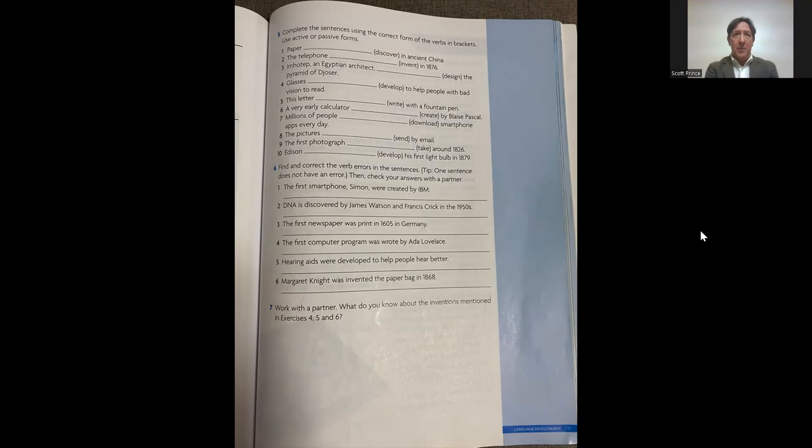Number four: glasses were developed to help people with bad vision to read. This letter was written with a fountain pen. Number seven: a very early calculator was created by Blaise Pascal. Number seven is an active sentence because it begins with people. It begins with who. Millions of people download smartphone apps every day. You can do that in the present. You don't have to change it to the past. Number eight: the pictures were sent by email. The first photograph was taken around 1826. Edison developed his first light bulb in 1879. Part six: correct the verb errors in the sentences. Tip, one sentence does not have an error. So five of them have a mistake. One of them does not. The first one: the first smartphone, Simon, were created. It should be was, was created by IBM. DNA is discovered. No, DNA was discovered. Number three: the first newspaper was print. Printed should be past tense. Number four: the first computer program was wrote. That should be was written. Number five: hearing aids were developed to help people hear better. Number five is OK, no problem. And number six: Margaret Knight was invented the paper bag in 1878. No, Margaret Knight invented active sentence. So get rid of was.